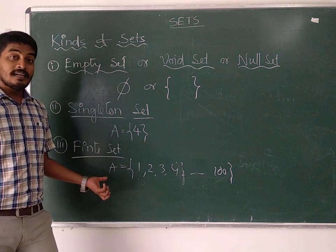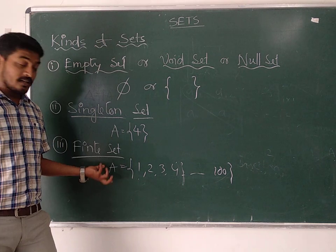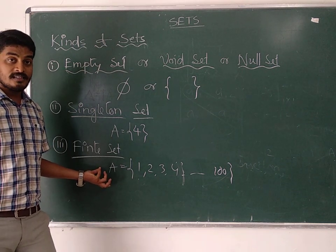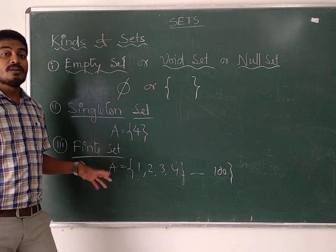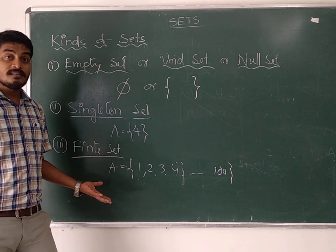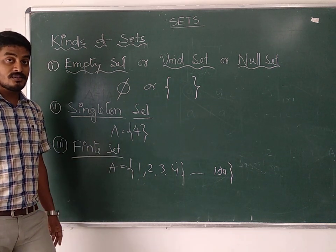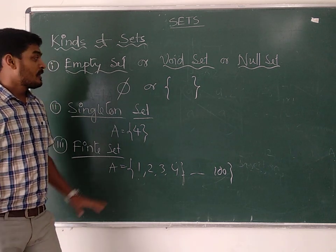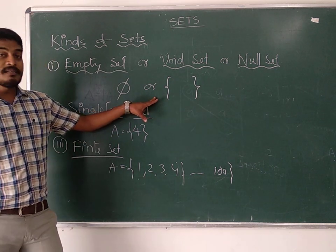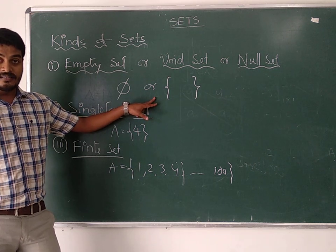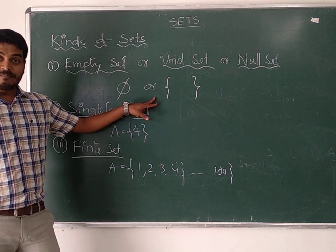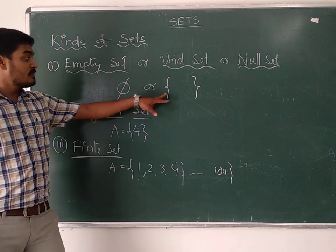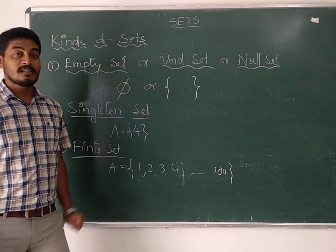If you cannot give an exact count of the number of elements in a collection, it is known as an infinite set. Infinite means the number of elements cannot be determined or stated precisely. Now, a question: is the empty set finite or infinite? Finite means you can give the exact number of elements. How many elements are in the empty set?